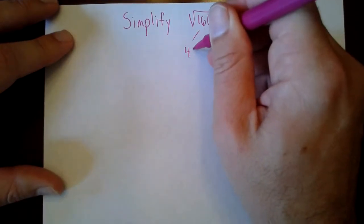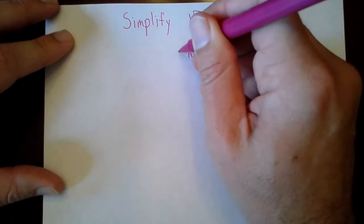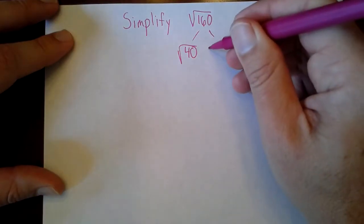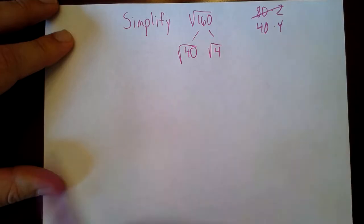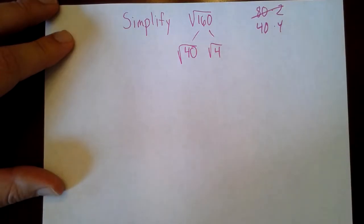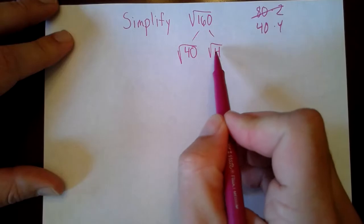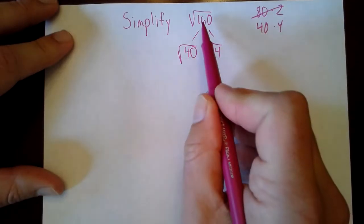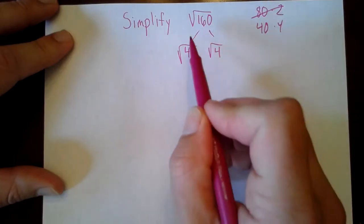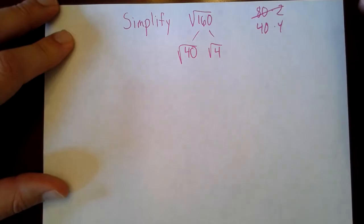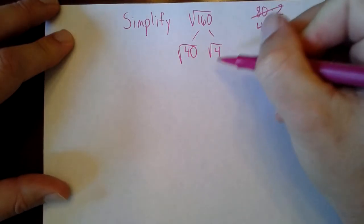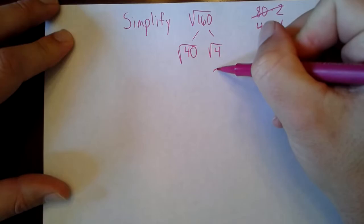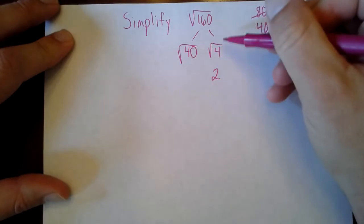Now I'm going to break this down into root 40 times root 4. The multiplication property of square roots says if I multiply these two radicands together — 40 and 4 — I get 160, so I'm allowed to break them apart as well. Root 4 is actually equal to 2, so I can just replace that with 2 — no more radical.